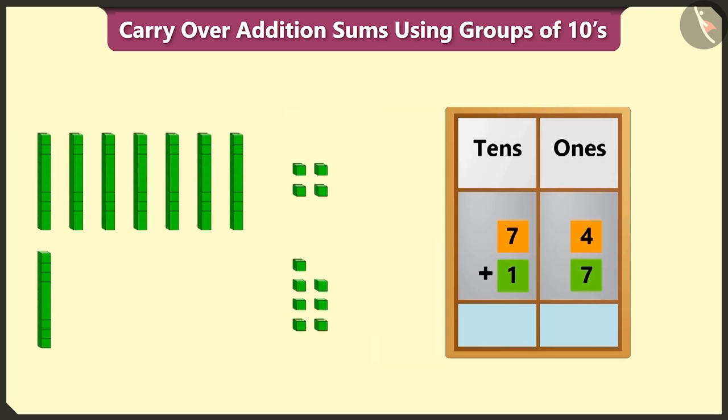Yes, after writing both numbers in this way in the ones and tens boxes, adding four and seven in the ones box makes eleven. Eleven means one ten and one one. We have to write one one in the ones box and carry over one ten.